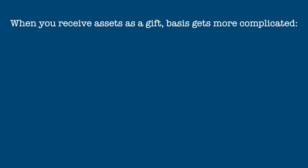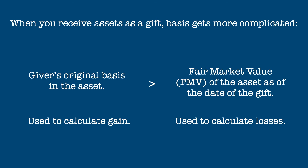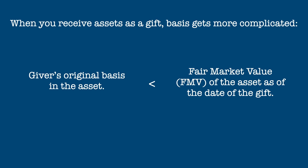When you receive assets as a gift, it's more complicated. The basis is either the giver's original basis or the fair market value of the investment as of the date of the gift. The figure you use depends on whether the fair market value is greater or less than the giver's original basis. If the fair market value is less than the giver's basis, you use the giver's basis to calculate any gain and the fair market value to calculate any loss. If the fair market value of the gift is greater than the giver's basis, the giver's basis is used to calculate both gain and loss.